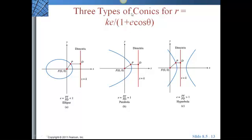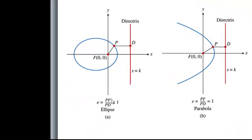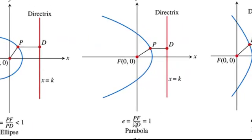So there are three types of conics for R equals KE divided by 1 plus E cosine theta. If the ratio of the distance from the point on the conic to the one focus divided by the distance from the point to the directrix is less than 1, we'll get an ellipse. If the distance from the focus to the point is the same as the distance from the point to the directrix, that's a parabola.